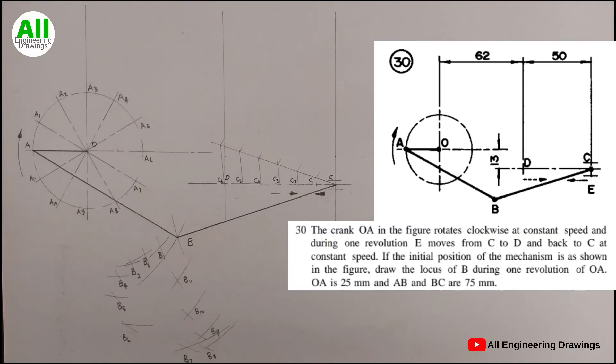Now we will draw a line joining each A point to its corresponding B point, and a line joining each B point to its corresponding C point.